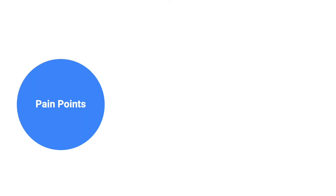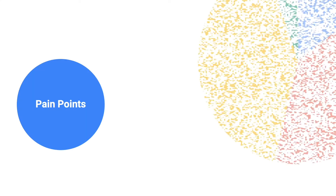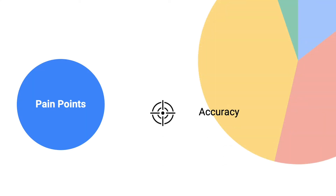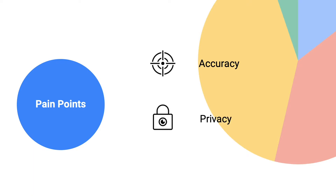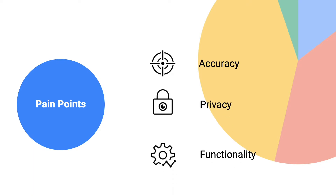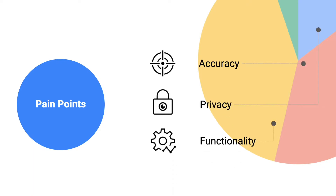This brings us to our persona's top three pain points: accuracy, privacy, and functionality. These findings were universal across our interviews, survey, heuristic evaluations, and usability tests.